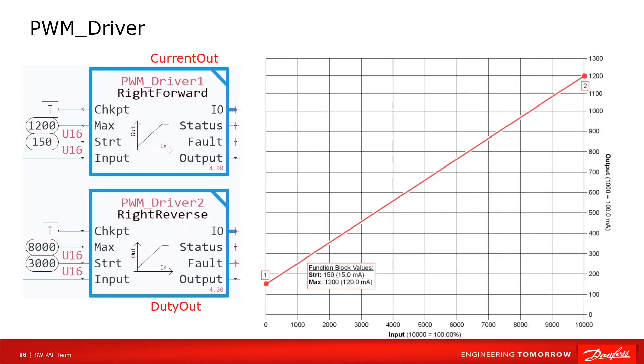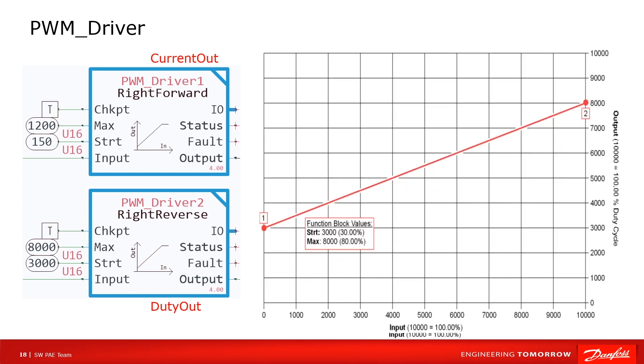So we should configure max and start according to the specific output type. As shown in the presentation, the first block is used for current out. Its output range should be from 50 to 120 milliamps. Second block is used for duty out. Its output range should be from 30 to 80 percent because different output type has different units.